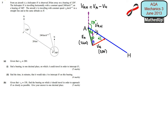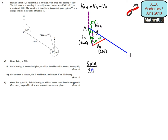I want to work out alpha so I can then work out this angle here, which I'll call theta. Theta is actually going to tell me the direction of VA, because this is going to be the bearing from north for the velocity of A. Using the sine rule: sine alpha divided by 240 is going to be equal to sine 40 over 200.